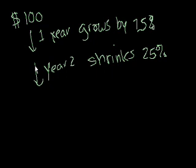A lot of people might say, oh, this is easy, Sal. If I grow by 25% and then I shrink by 25%, I'll end up with the same amount of money. But I'll show you it's actually not that simple, because the 25% in either case, or in both cases, is actually a different amount of money. So let's figure this out.